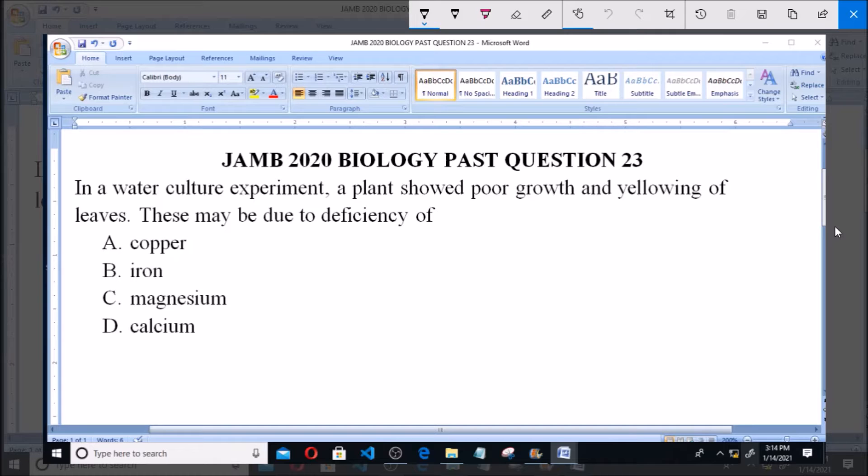iron, C. magnesium, and D. calcium. Now, in a water culture experiment, when a plant shows poor growth and yellowing of leaves,